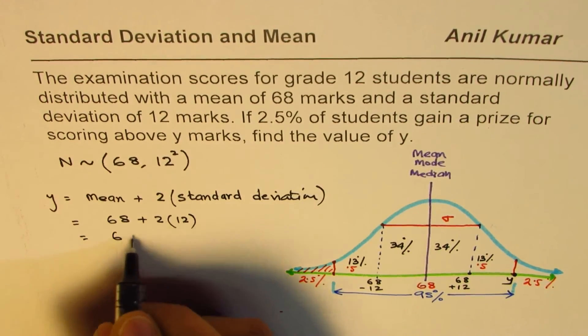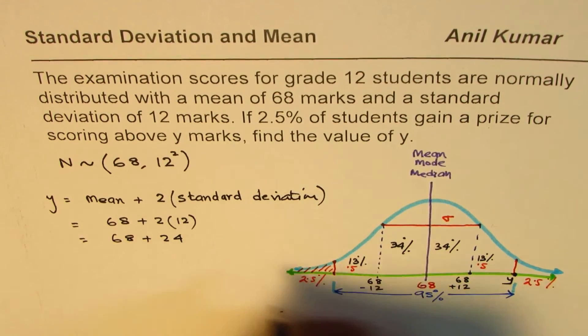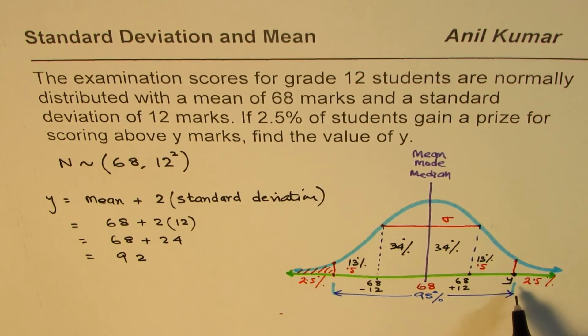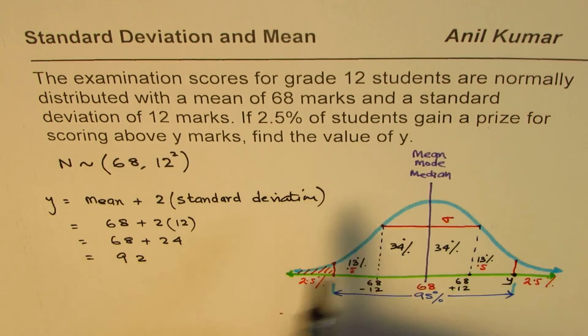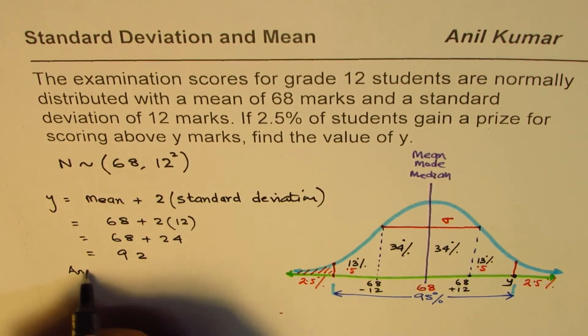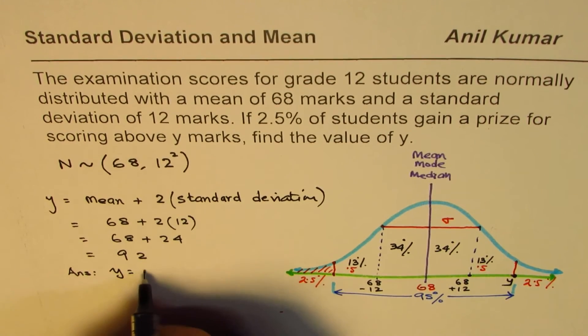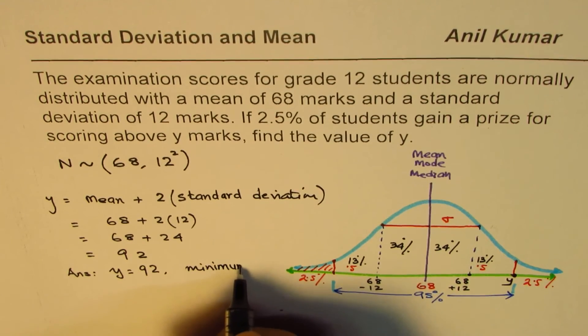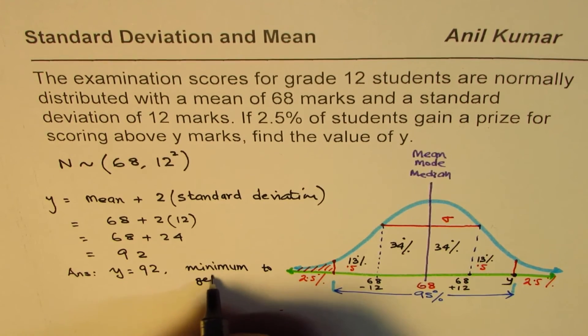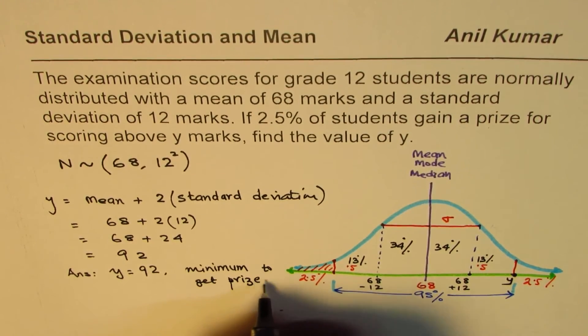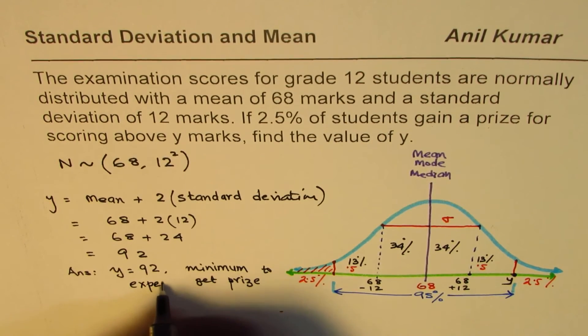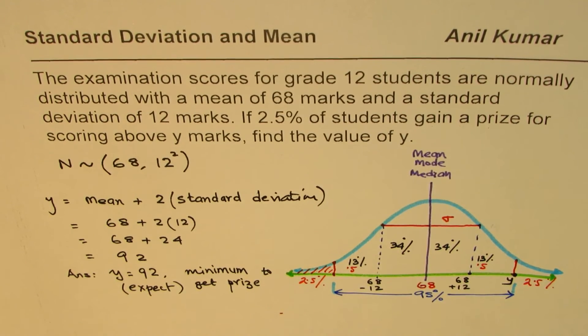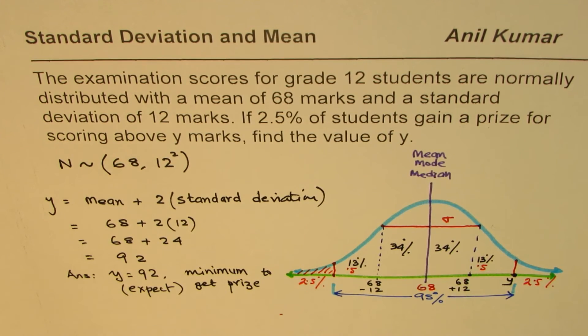That gives us 68 plus 24, and that should equal 92. So the person who gets at least 92 marks will get a prize. We could write down our answer: y equals 92. That means this is the minimum to get the prize, or you should use the word expected, because it's a case of probability. That is what is expected.